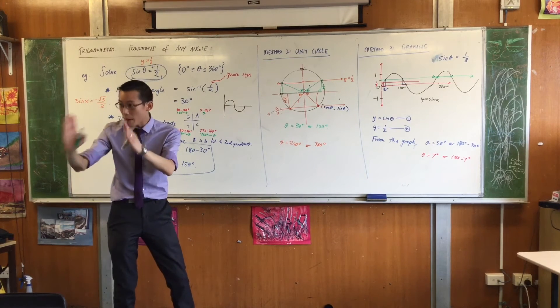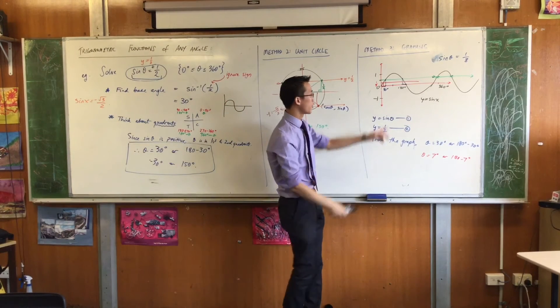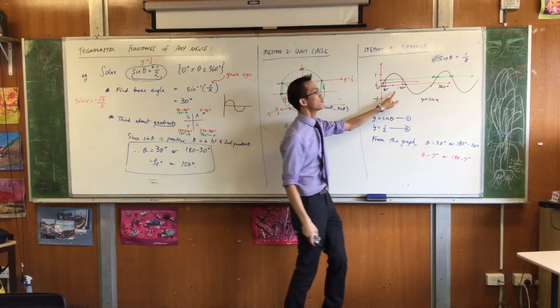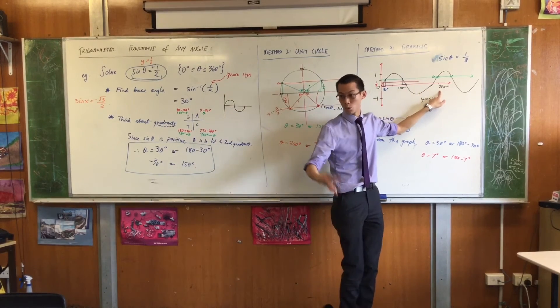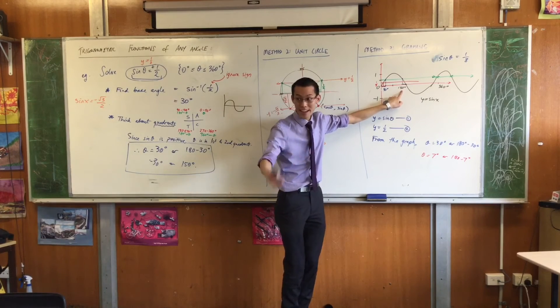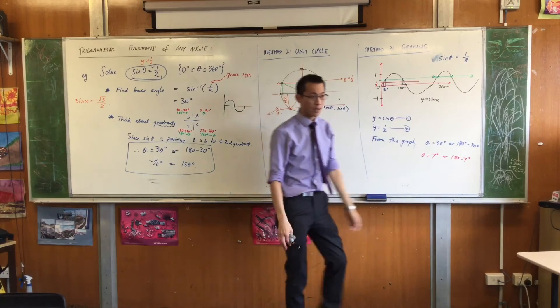Because it's the same copy every 360 degrees, right? Every 360, so if I had an answer at 30, I'll have another answer 360 degrees later, which is 390. If I've got an answer at 150, I'll have another answer 360 degrees later, which is 510, and on and on forever.